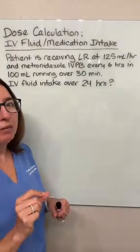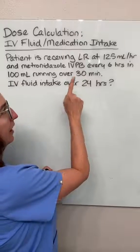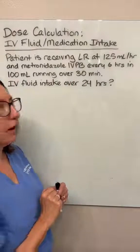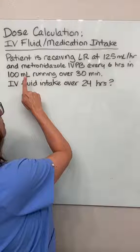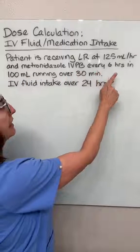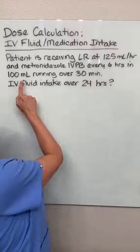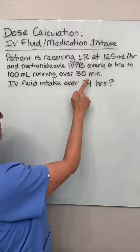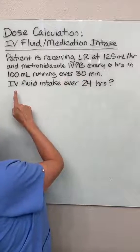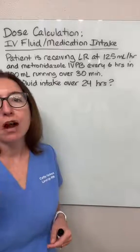In this problem, our patient is receiving lactated ringers at 125 milliliters per hour. They are also receiving metronidazole IV piggyback every six hours in 100 milliliters of fluid running over 30 minutes. We need to figure out our patient's IV fluid intake over 24 hours.